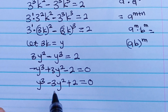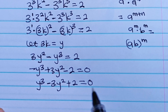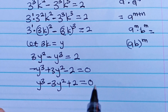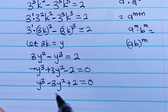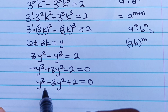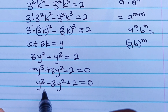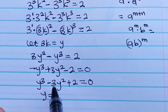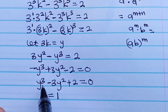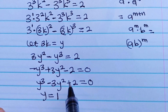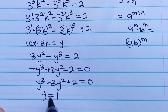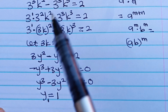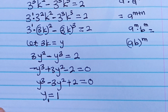Now let's solve this. We cannot solve this by factorization method, so I am going to solve this cubic equation using trial and error. When y equals 1: y³ minus 3y² plus 2 gives us 1 minus 3 plus 2, which equals 0. So y equal to 1 is the first value of y. But recall that we are not looking for y — we are looking for k.